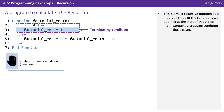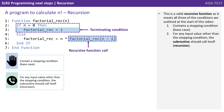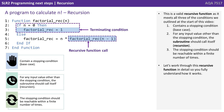This is a valid recursive function as it meets all three of the conditions we outlined at the start of the video. One: it contains a stopping condition or base case. Two: for any input value other than the stopping condition, the subroutine recursively calls itself. And three: the stopping condition is reachable in a finite number of times. Let's work through this recursive function in detail so you fully understand how it works.